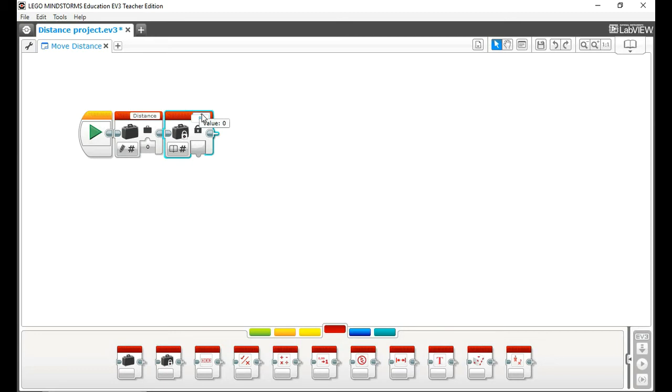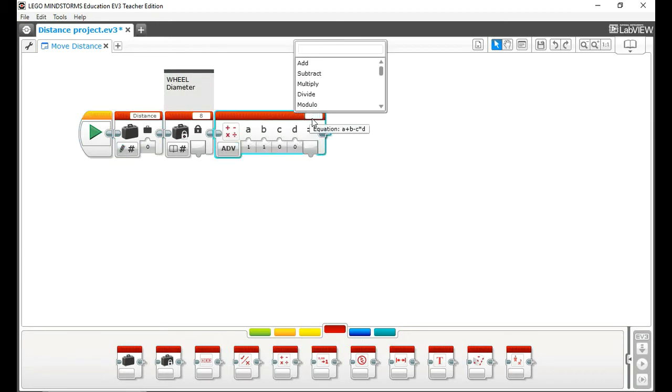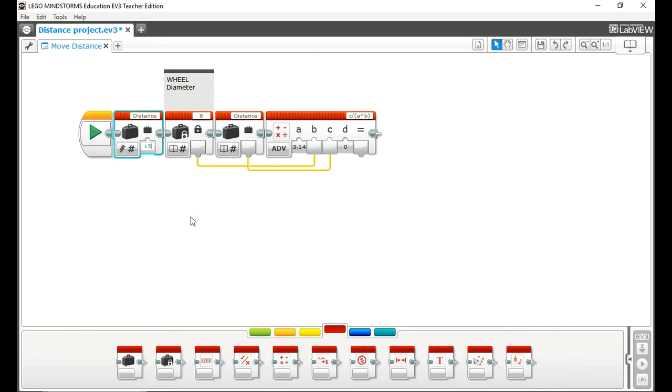This is the diameter of the wheel in centimeters. Then we will create an advanced math block and insert the discussed equation. The result of the math block is the number of rotations the motor must rotate.